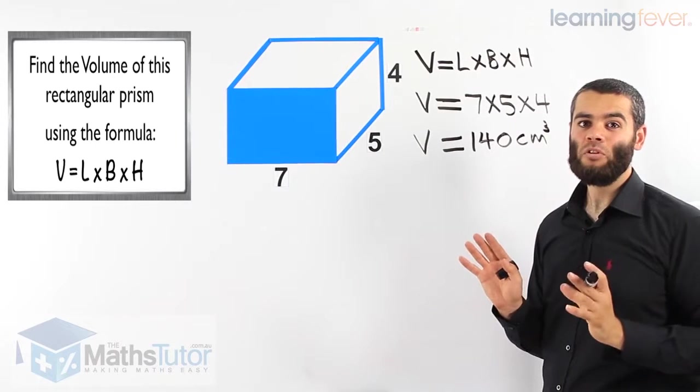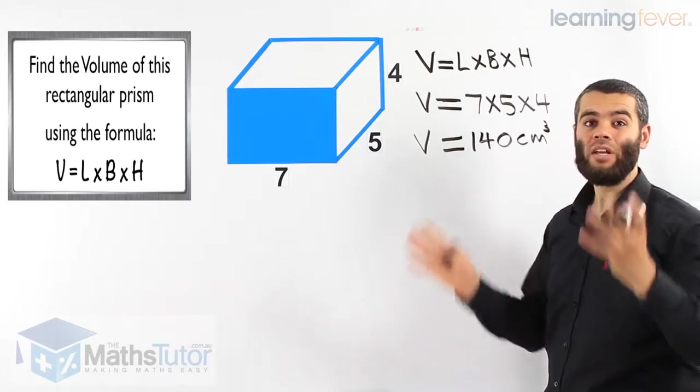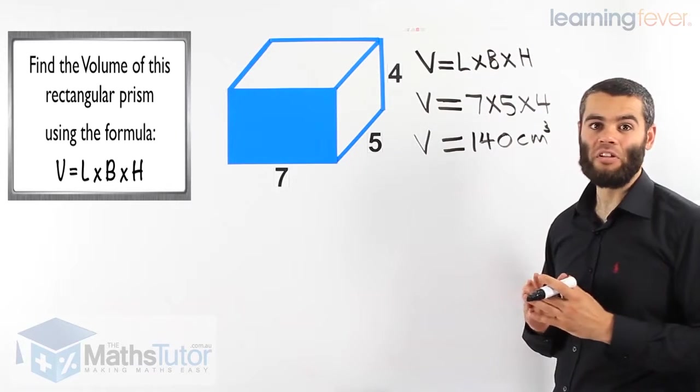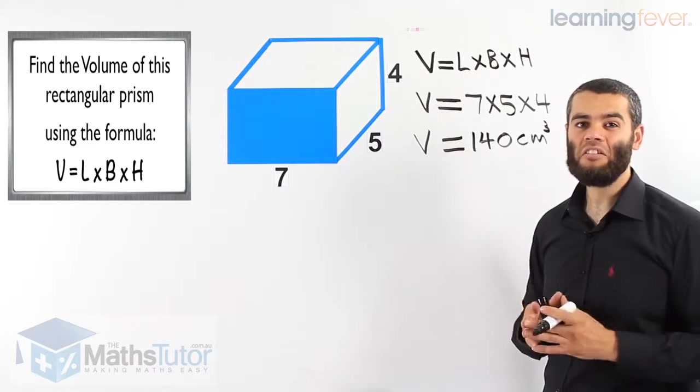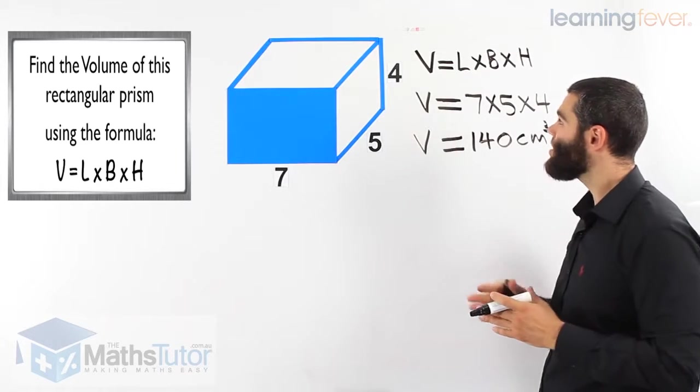In area, we were using square units. Now, because we are working with volume, three-dimensional, 3D, we are using cubic units. So in this case, in centimeters, cubic centimeters. If it was in meters, cubic meters. So here, this rectangular prism, V equals length times breadth times height.